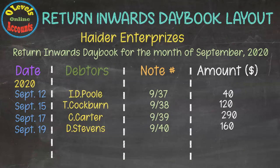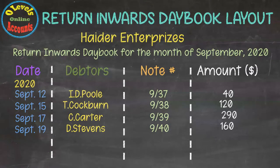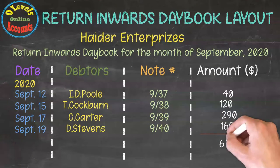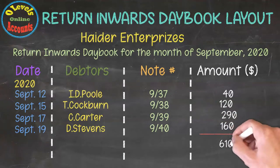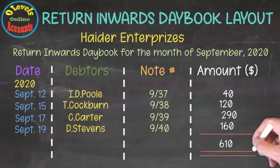Here we have a Return Inwards Daybook layout. In this layout, we place the heading of the business and the related information for the transaction — that is the date, debtor's name, credit note numbers, and related amounts in the respective columns. After that, we get a total of 610.